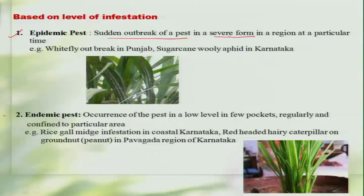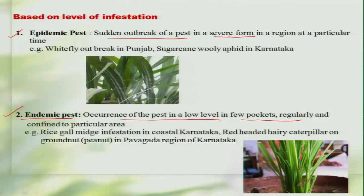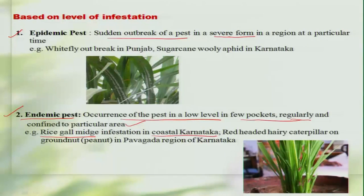The second category based on infestation level is the endemic pest. Here, the pest occurs at a low level in certain pockets, but it occurs regularly and is confined to a particular area. For example, the rice gall midge infestation in the coastal belt of Karnataka and Kerala, where this pest is seen only along the coastal border and regularly appears in certain pockets. Such pests are named endemic pests.